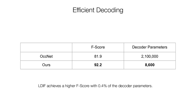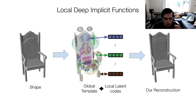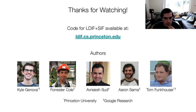Finally, efficient decoding is another big benefit. The F-score improves by 10 points, and at the same time the number of decoder parameters decreases by two orders of magnitude, making it possible to evaluate densely on a 128-cubed grid at 20 frames a second — so no need for more sophisticated inference methods. The key idea is to represent shapes with global templates that have local latent codes associated with the template elements, giving you the fine details and letting you be more generalizable, higher fidelity, and more efficient. Thanks very much for watching. Code is available at ldif.cs.princeton.edu.